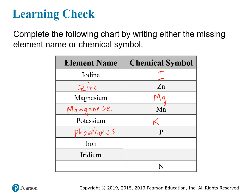Iron, remember, is not Ir — it comes from the Latin and it's Fe. On the other hand, iridium, which is another element, does have the symbol Ir. So don't look at the symbol Ir and think that must be iron. Iron is Fe; iridium is Ir. And you're probably not going to deal with iridium very much — it's a more rare element.